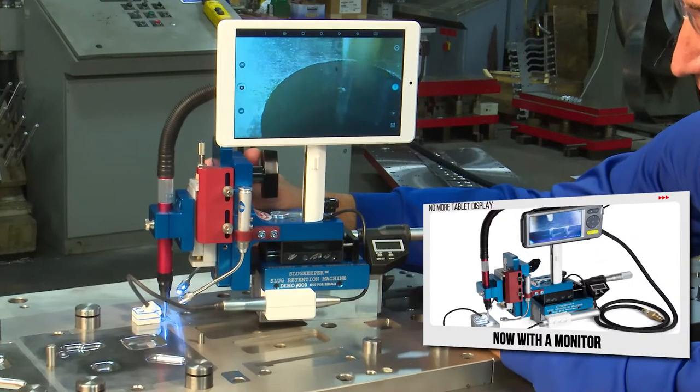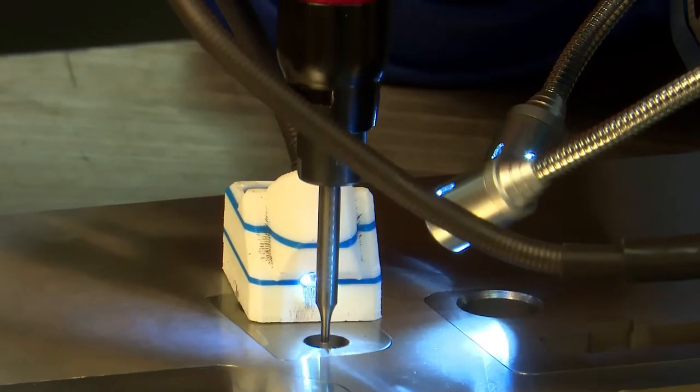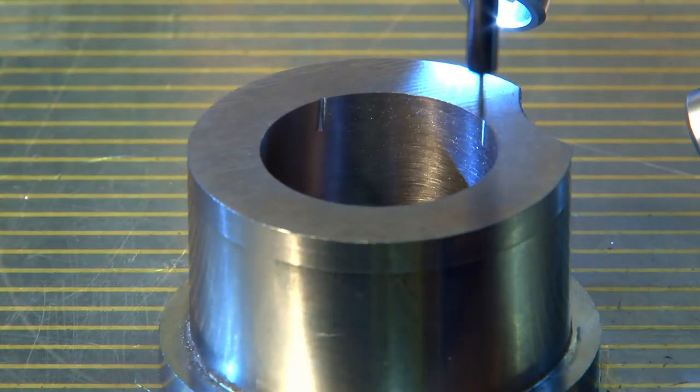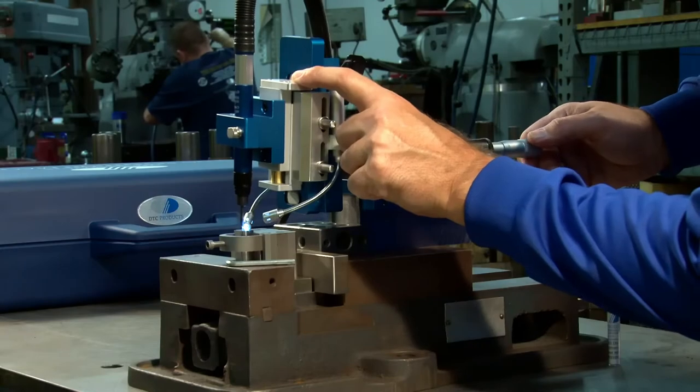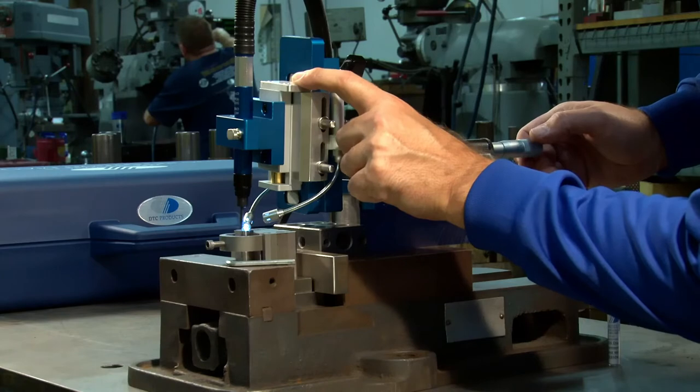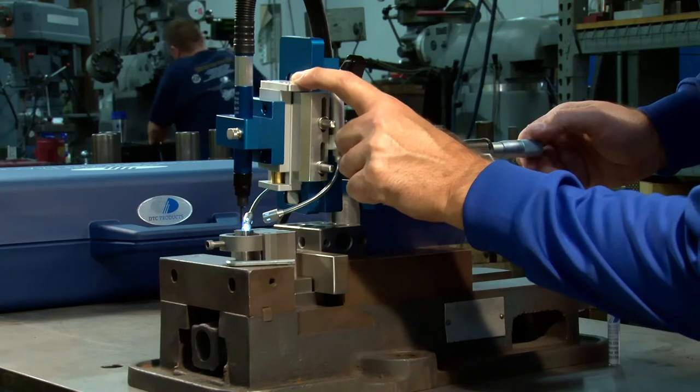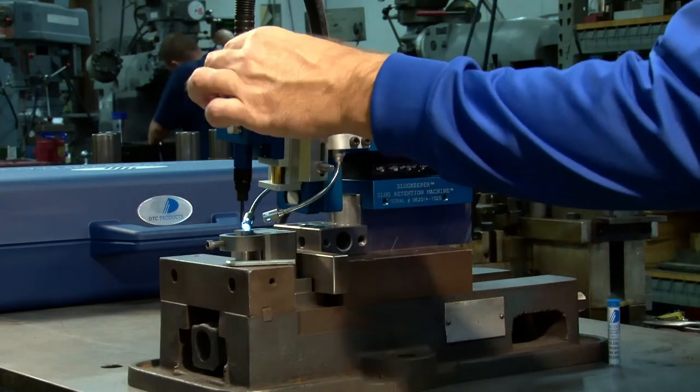The slug keeper can be used on die blocks, die inserts and die bushings in the tool room, as well as on a die while it's in the press. This same amazing machine can also be used to put grooves into guided stripper openings to vent an opening, reducing the suction caused by the retraction of the punch.